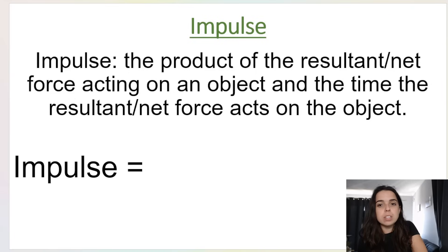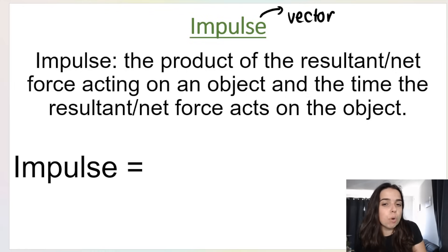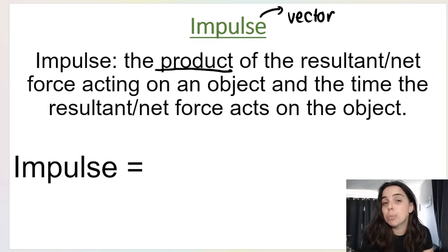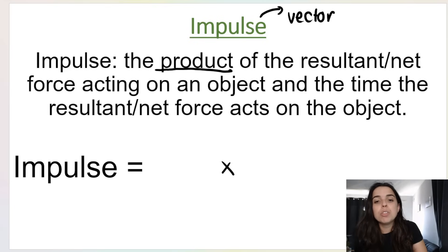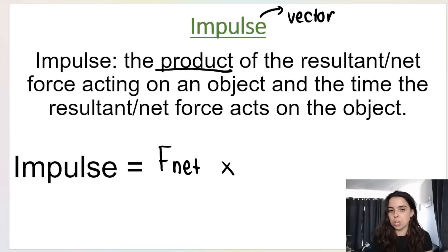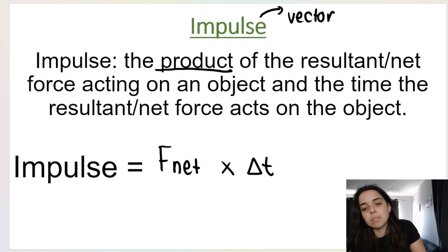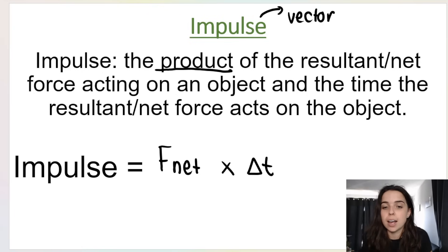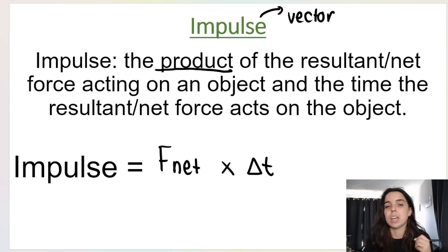Impulse is a vector, which means it needs a direction. Let's take the definition and produce a formula from it. Impulse is equal to the product — and product means multiplication — of the resultant or net force acting on an object, which is F net, and the time that the force acts on the object, which is delta t. So impulse equals F net times delta t.